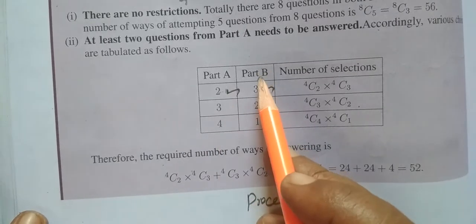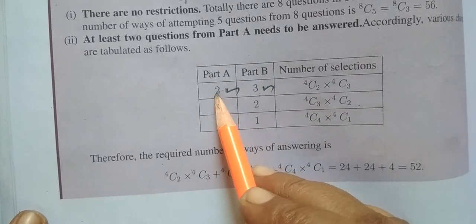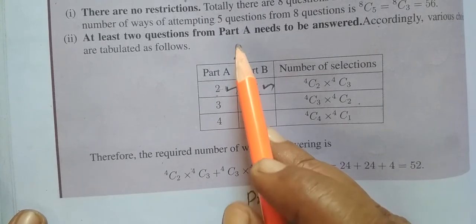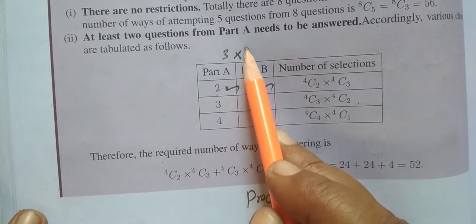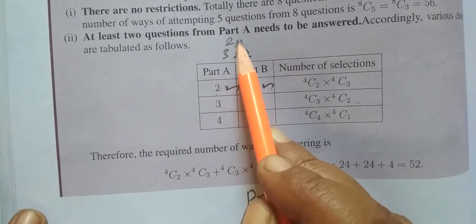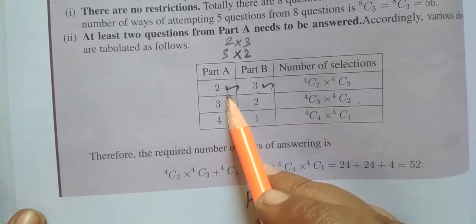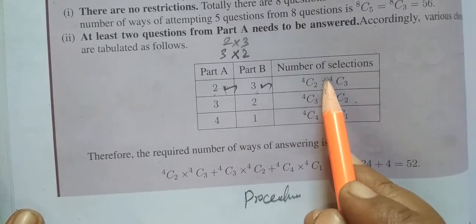We will select from Part A first. Then we have to select from Part B. In this procedure, we will complete the product rule. You will apply the condition using the product rule.